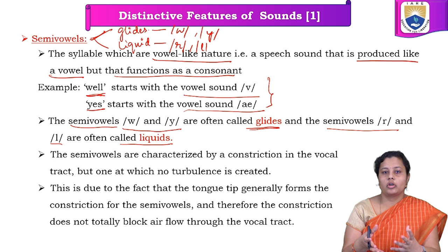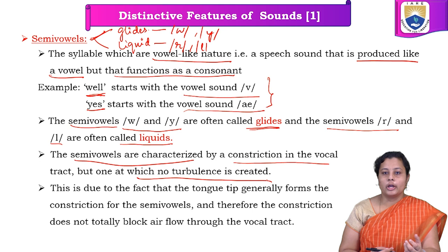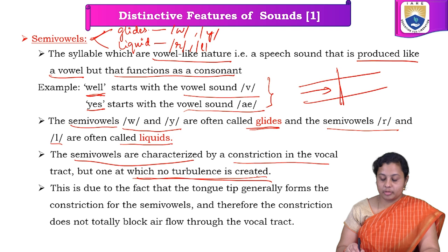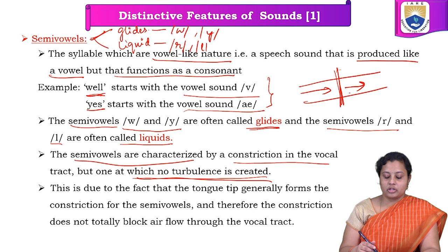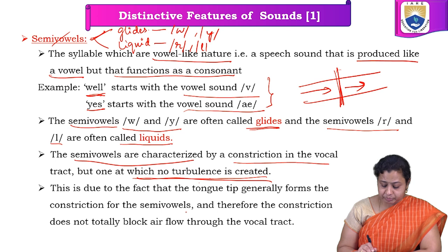When air is passing through the vocal tract, an obstacle is created, but there is no turbulence generated. Because of this obstacle, we get a different sound called semi-vowels. Since there is no turbulence but a constriction has been created, that is why they sound like vowel sounds.